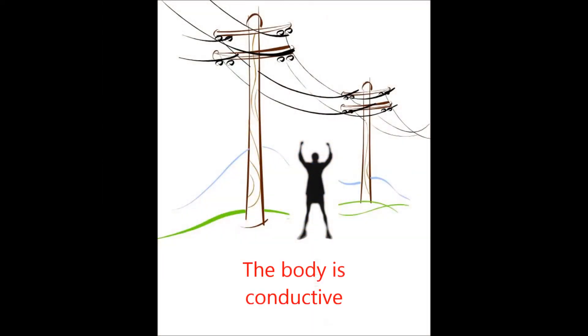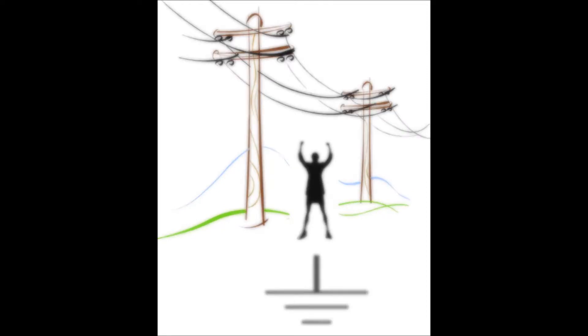AC voltage can be induced in the human body when it is exposed to external electromagnetic sources such as household wiring, power lines, appliances, and computers.